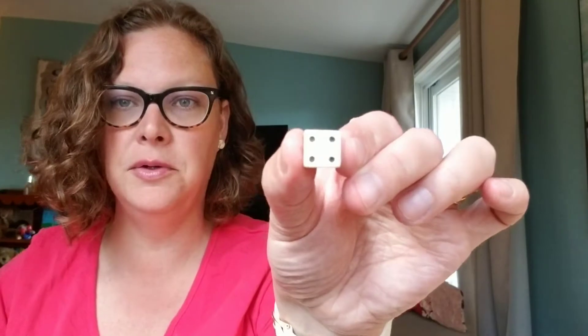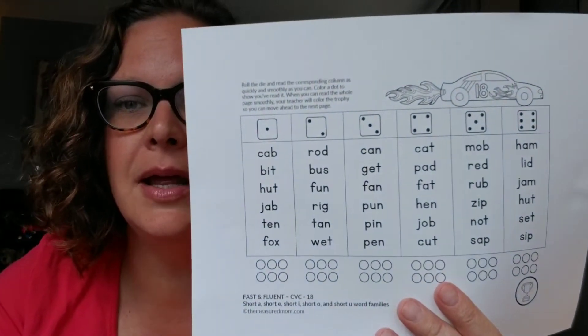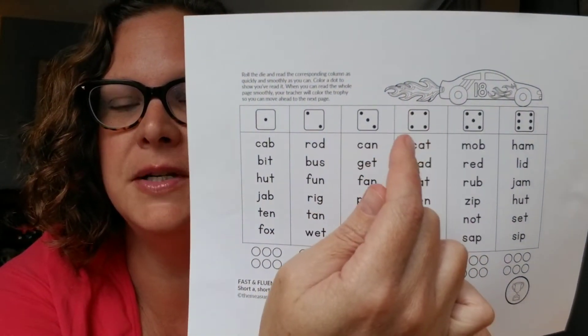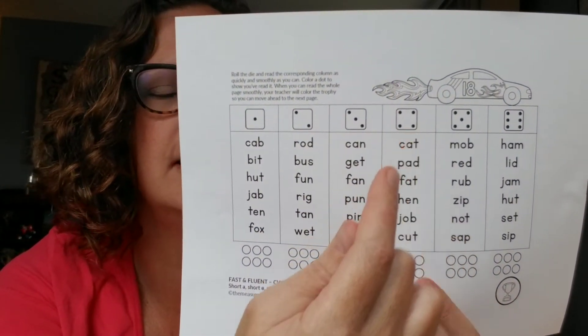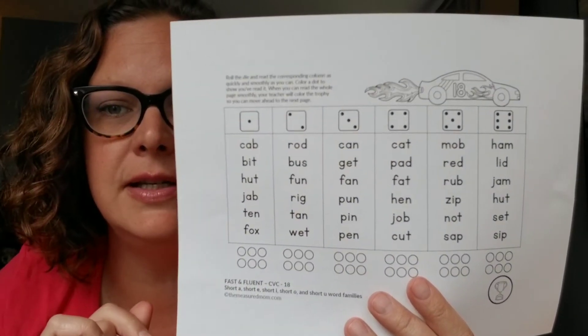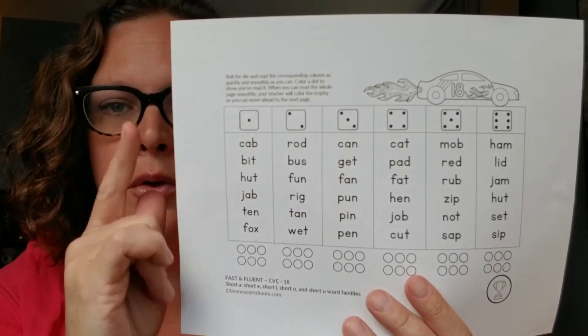So the first thing you would do is roll your dice — I have rolled a four. We're subitizing too. So then I come and I find the four column. Do you see it right here? And then as quickly as I can I'm going to practice reading those CVC words — consonant, vowel, consonant.